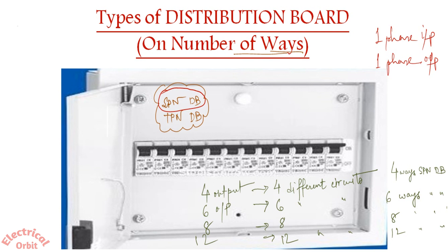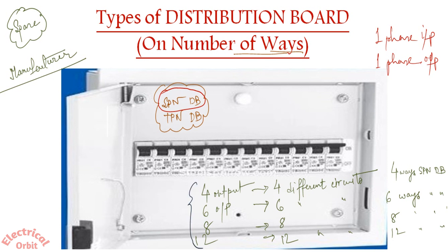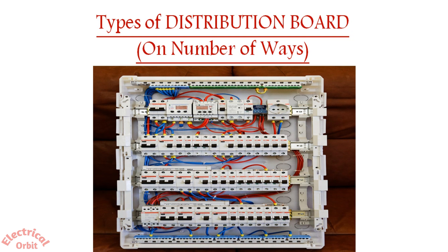There is also the concept of spare, which I will cover shortly. The available DB sizes depend on the manufacturer and market availability, but typically for SPN and TPN DBs, four-way, six-way, eight-way, and twelve-way are available in the market. For TPN DBs specifically, the available sizes are four-way, six-way, and eight-way.